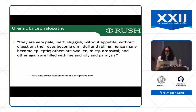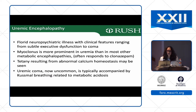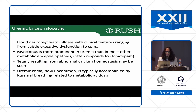For uremic encephalopathy — going back as far as the first century, there has been description of it: patients are pale, inert, sluggish, without appetite, and look swollen. You can get large neuropsychiatric illnesses ranging from subtle symptoms all the way up to coma. Myoclonus is much more prominent in patients with uremia, and you can get tetany as a result of abnormal calcium homeostasis. Uremic coma can also be present, though we don't see that anymore because of more aggressive hemodialysis and removal of toxins.